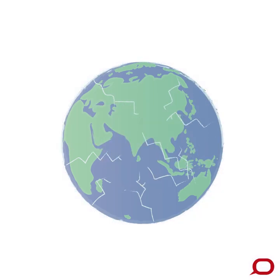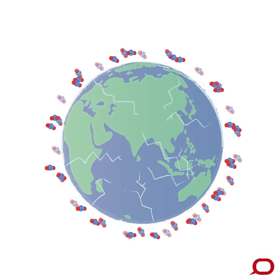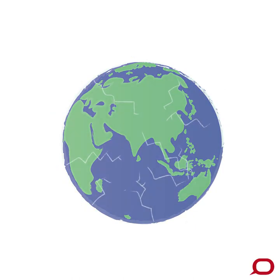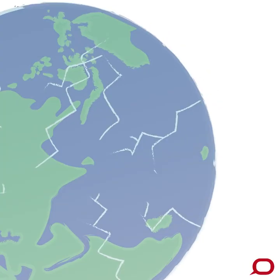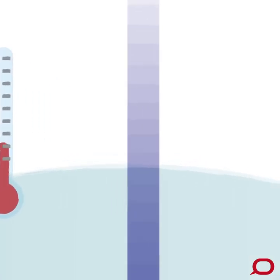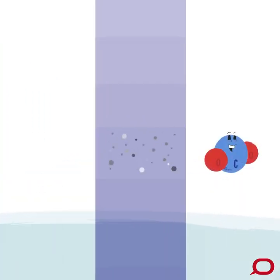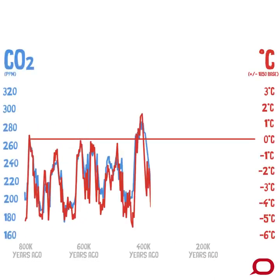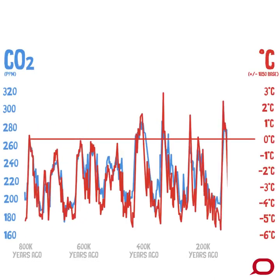We know from the geological record that natural changes in carbon dioxide levels have directly related to past increases and decreases in global temperatures. Scientists use ice core records from Antarctica to reconstruct prehistoric temperature records, and those same ice layers trap little bubbles of CO2, which means we can see how they relate over time. Temperature and CO2 have fluctuated together through ice ages and warm periods, called interglacials.